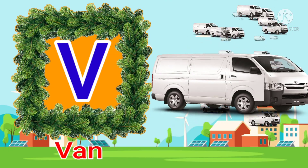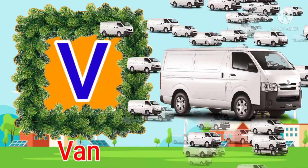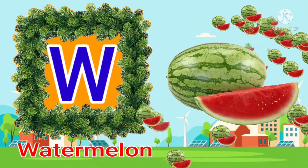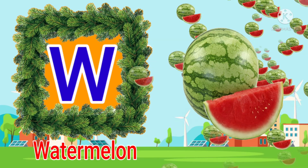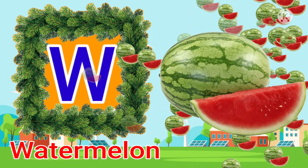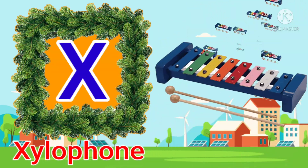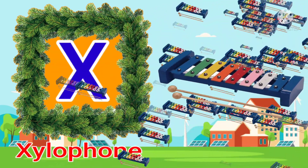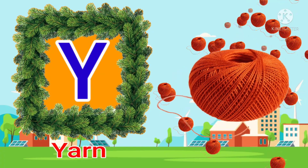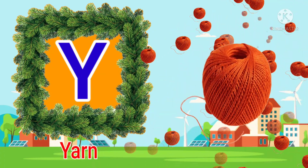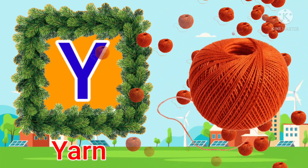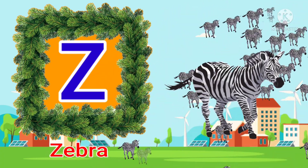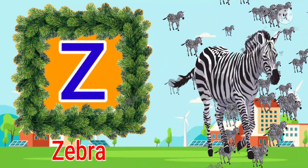U for umbrella, V for vein, W for watermelon, X for xylophone, Y for yarn, Z for zebra.